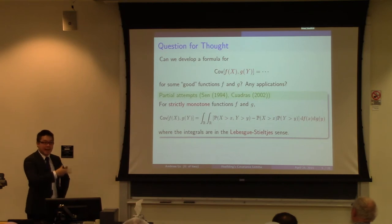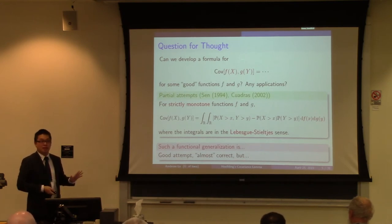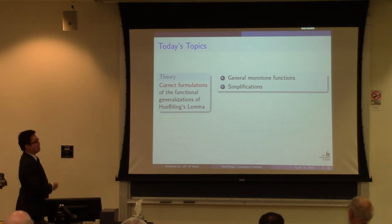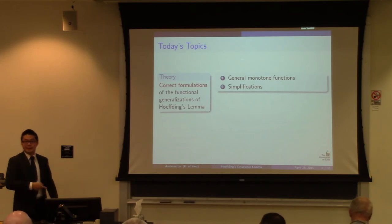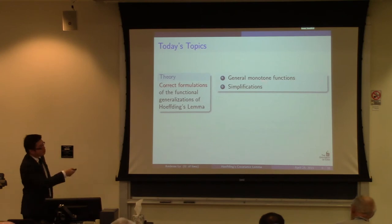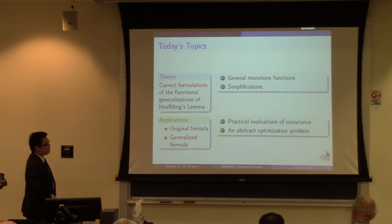This formula makes perfect sense and is intuitively clear — almost correct — but in general it is not true. In this talk I will explain why this formula is generally not true and then provide the correct formulation of the functional generalization. Because of time constraints, I will only deal with monotone cases. If we have additional conditions on the two functions, then of course we will have some simplifications. I hope to also cover one application of the original formula and one application of the generalized formula in the context of practical covariance evaluation.